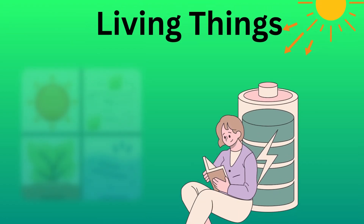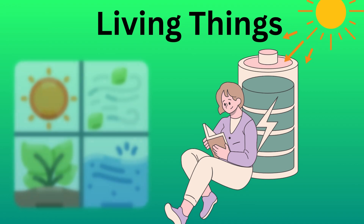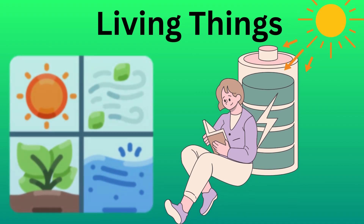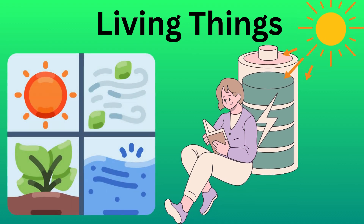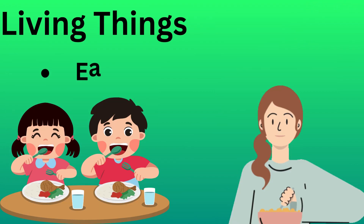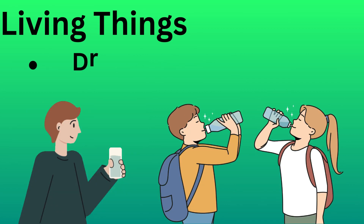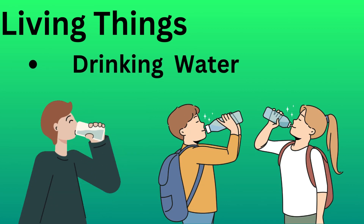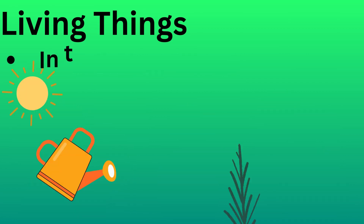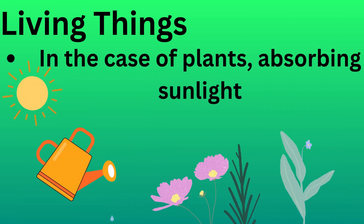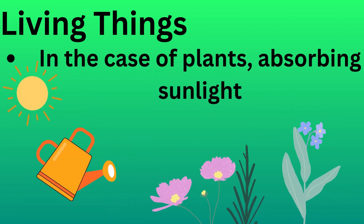Firstly, living things need energy to survive. They get this energy by eating food, drinking water and, in the case of plants, absorbing sunlight.